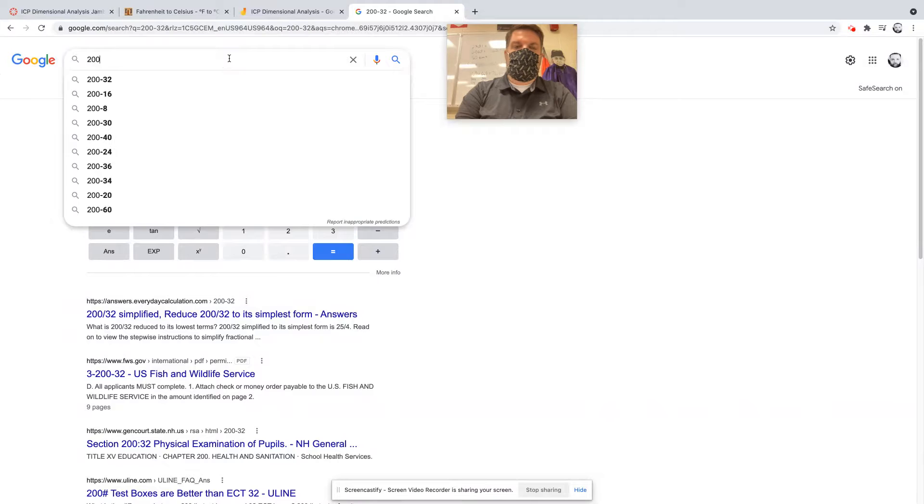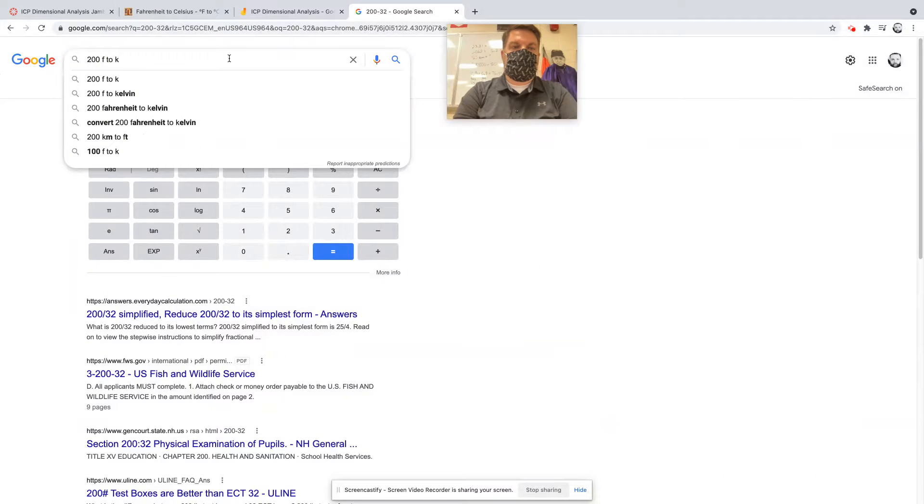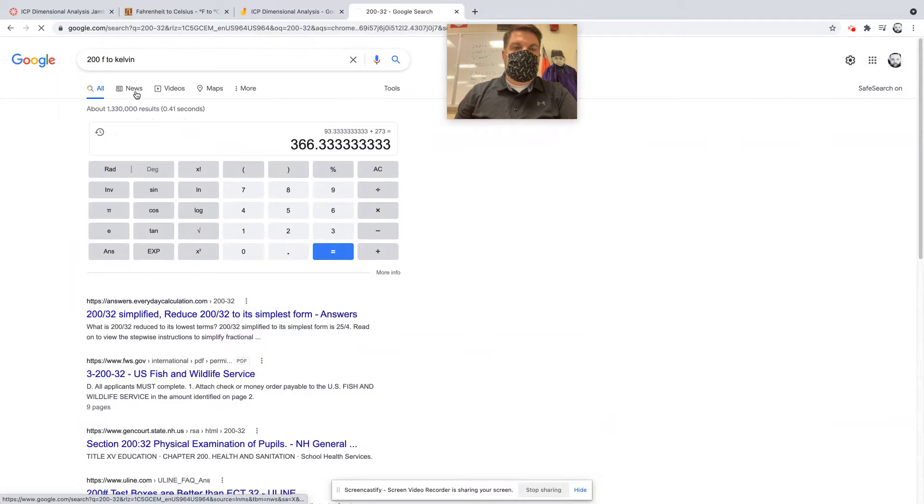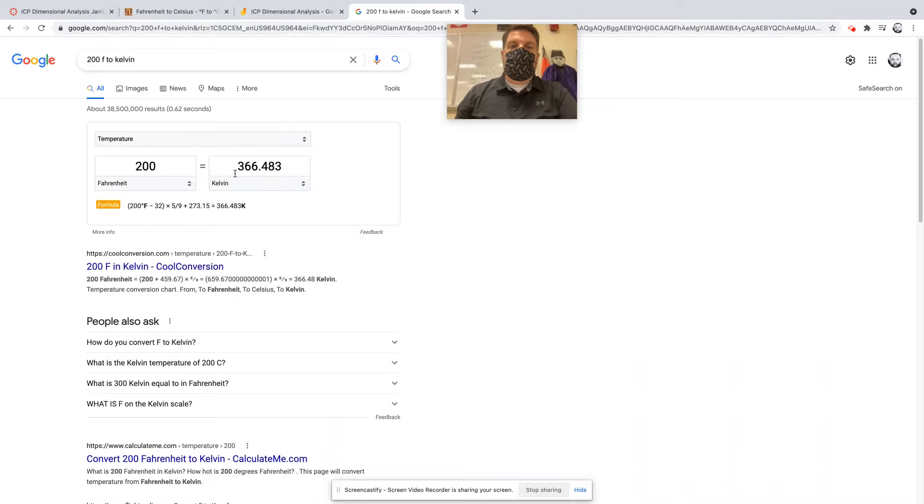So I'm going to say 200 degrees Fahrenheit to Kelvin. 366.48. Now, there's some rounding because we use fractions and decimals and stuff like that. But that's right. Okay. We got it right. Does that make sense? No? Okay.